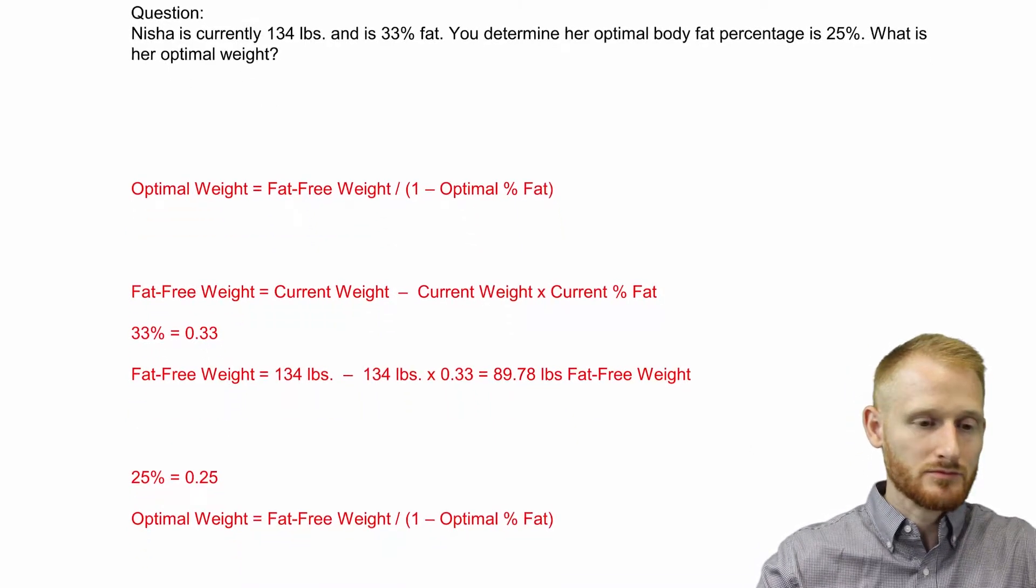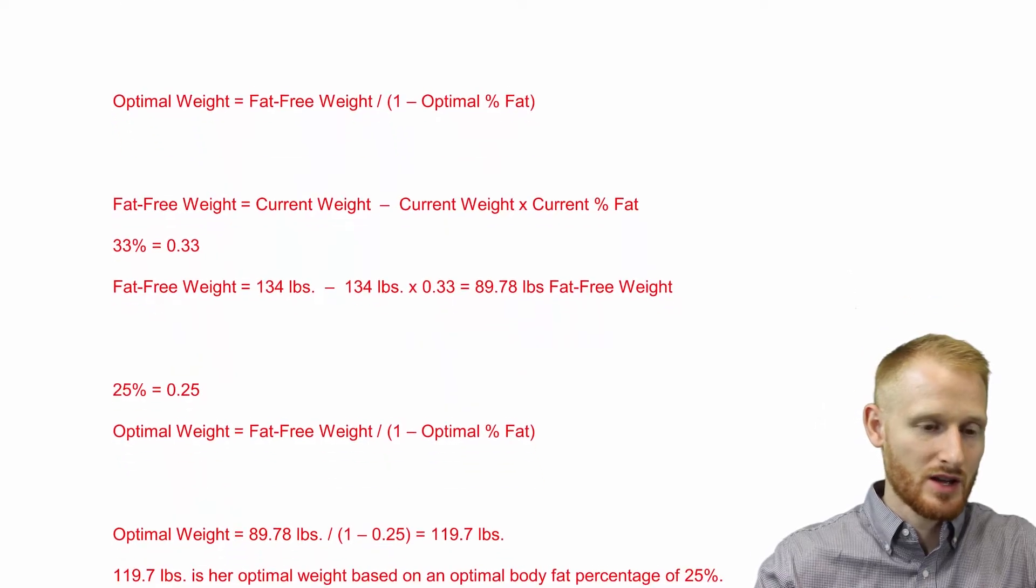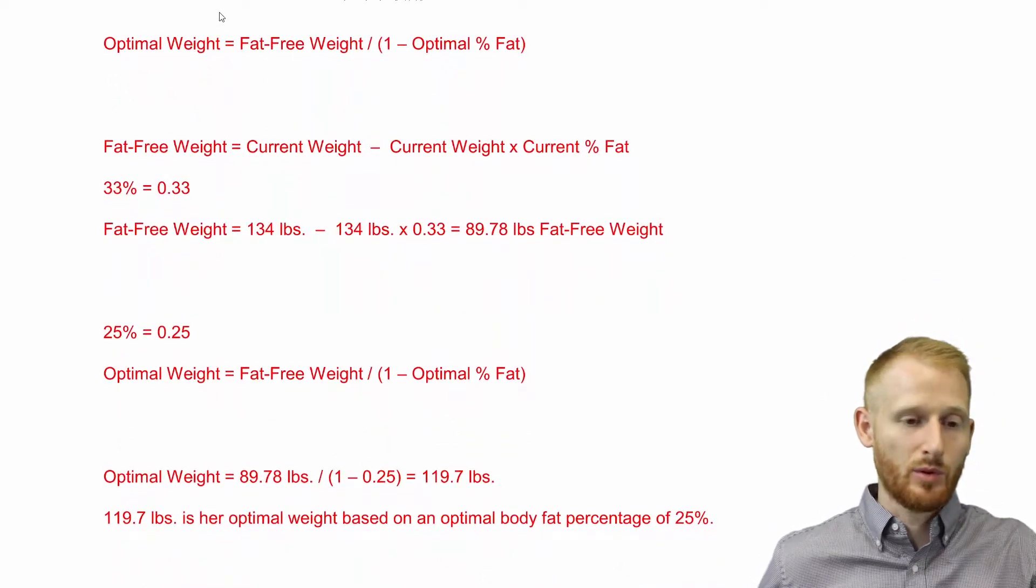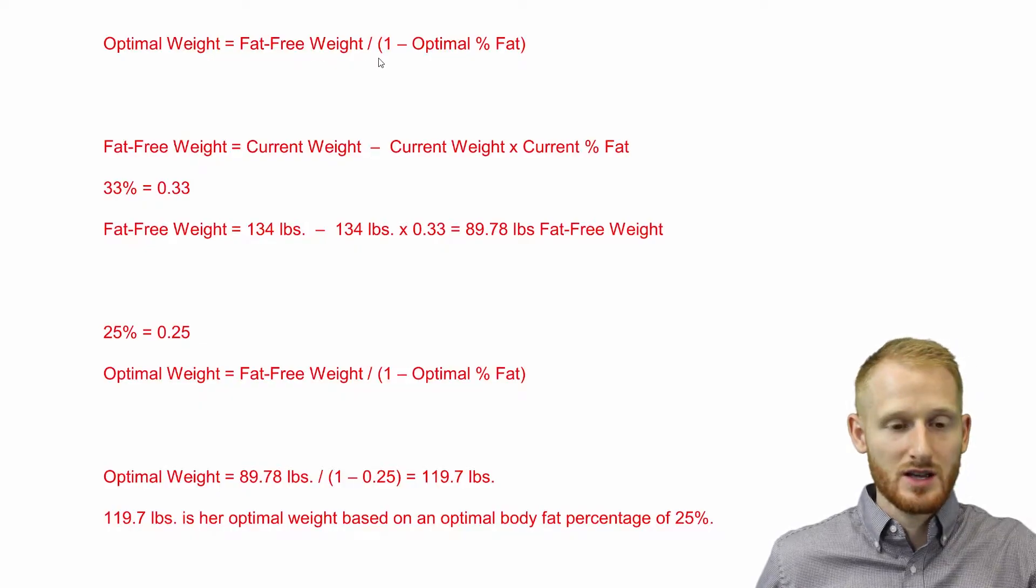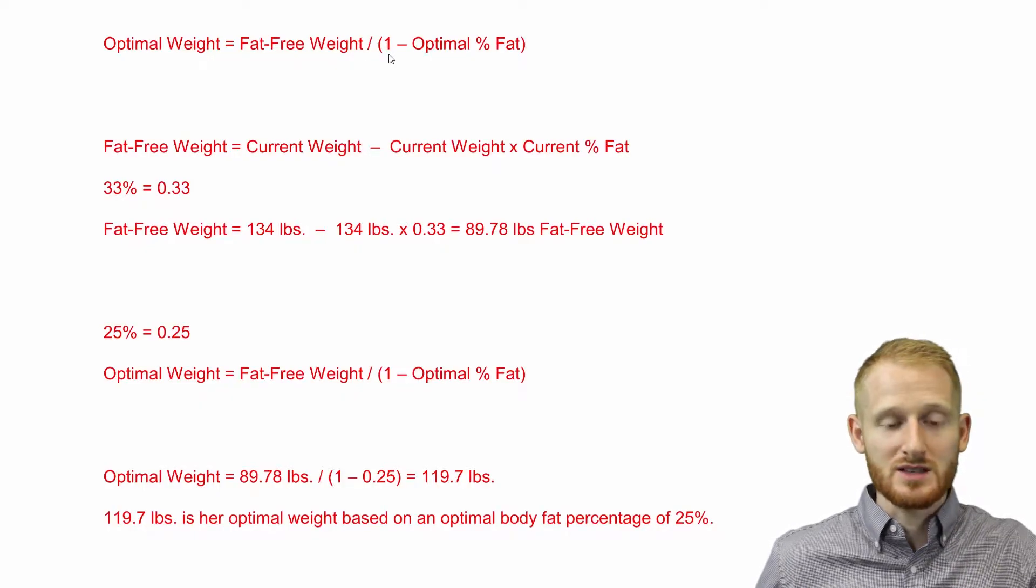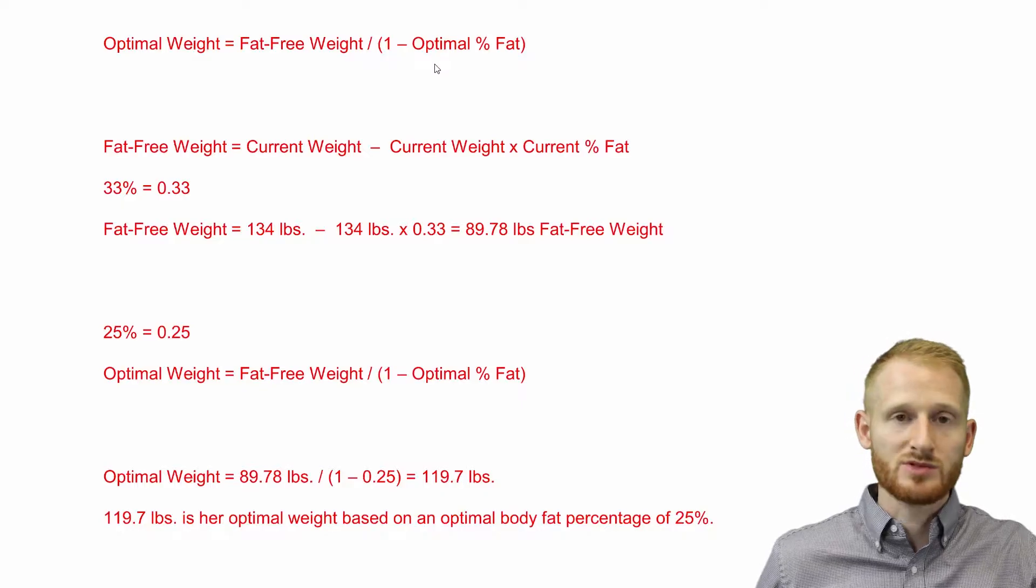So how do we do this? First, let's look at the optimal weight calculation. It is fat-free weight divided by, in parentheses, one minus optimal percent body fat.